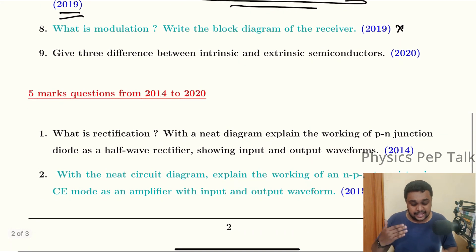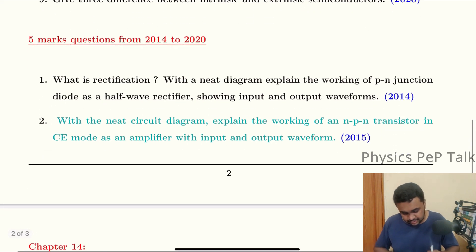Three differences between intrinsic and extrinsic semiconductors. This is important. Intrinsic should be pure semiconductors, extrinsic are impurity-doped. Intrinsic: number of electrons and holes are equal. Extrinsic: electrons and holes are not equal. Intrinsic: temperature varies the conductivity. Extrinsic: doping concentration varies the conductivity.